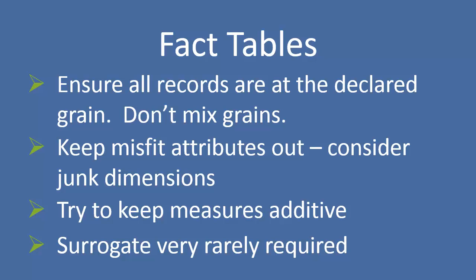Don't put attributes in your fact table. The fact table is for facts and for pointers to your dimensions. If you need to put attributes somewhere that don't really fit into other dimensions, then consider creating a junk dimension. Try to keep your measures additive — it's one of those things that may not be possible 100% of the time, but it makes life really easy whenever you're trying to actually use this model.